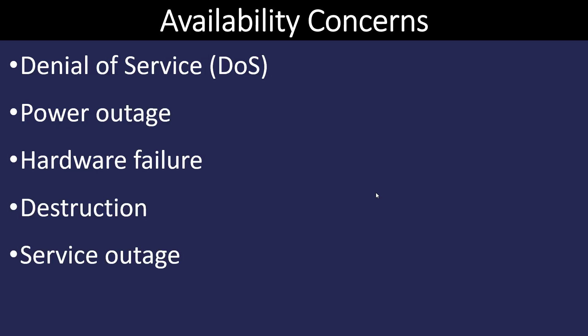Availability is simply making sure that our computer resources are available all the time to the appropriate people. You've probably heard the term denial of service, where a network becomes overwhelmed with traffic and it can no longer serve up the data. But also power outages, hardware failures, destruction through weather or fire, or even a service outage of our internet would affect the availability of our network resources.